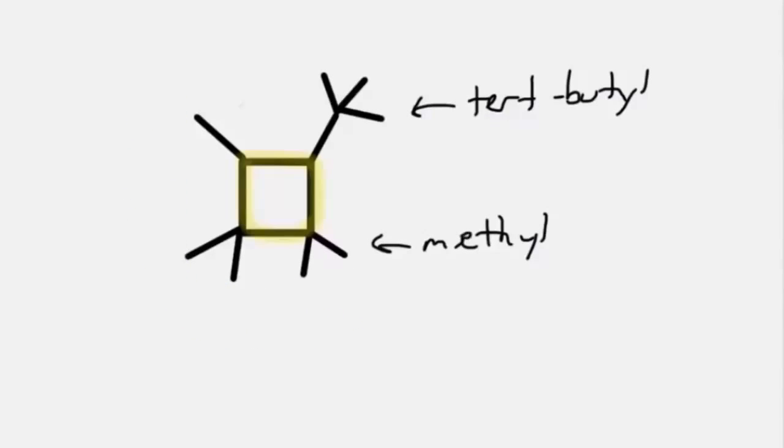In numbering, we want to give the lowest number to the first substituent that is in alphabetical order. This would be tert-butyl. B for butyl. Tert is not considered part of the alphabetical ordering. So tert-butyl gets carbon-1. We want to count clockwise because 4 out of the 5 methyl groups would be numbered lower at carbons 2 and 3 rather than carbons 3 and 4.